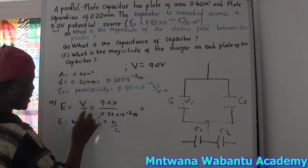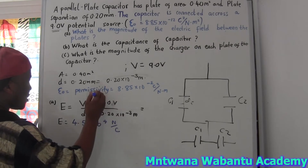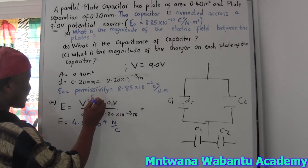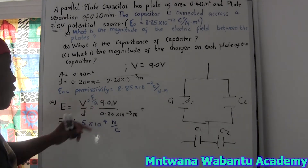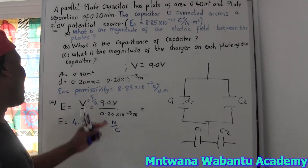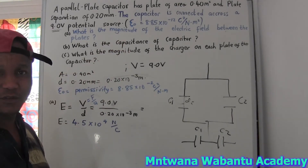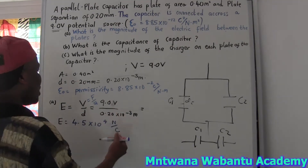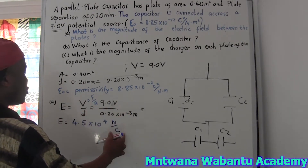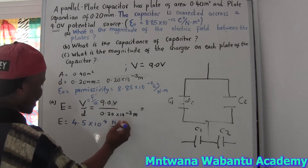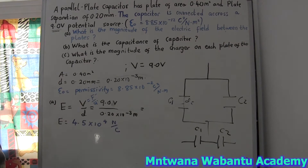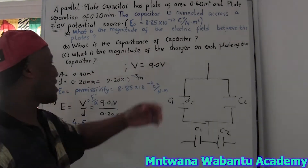Electric field can also be expressed as force over quantity of charge — which gives newtons per coulomb — or as potential difference over distance separation. For this case, force is not involved, so we use volts per meter or newtons per coulomb. Either way, both are correct. I'll take newtons per coulomb — it's fine.